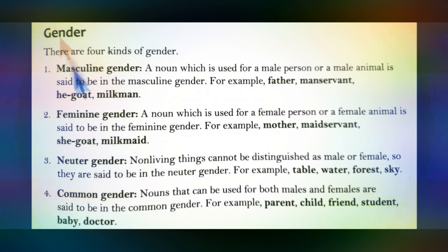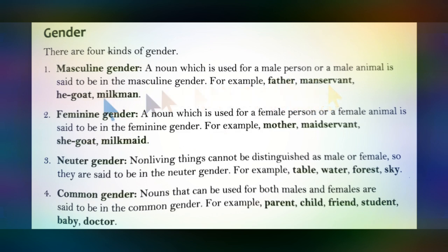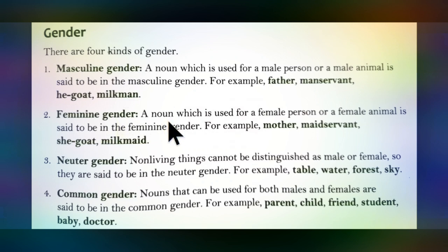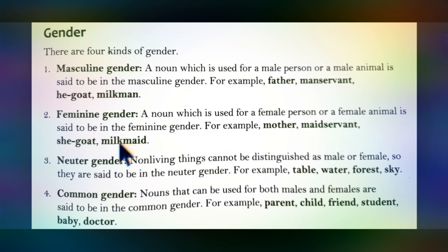Now let's study gender. There are four kinds of gender. Masculine gender refers to a noun used for a male person or male animal — for example: father, manservant, he-goat, milkman. Feminine gender refers to a noun used for a female person or female animal — for example: mother, sister, maidservant, she-goat, milkmaid.